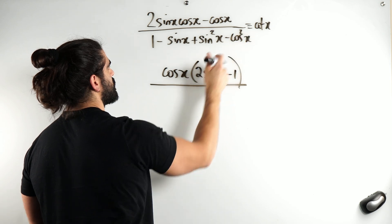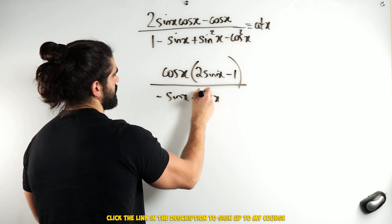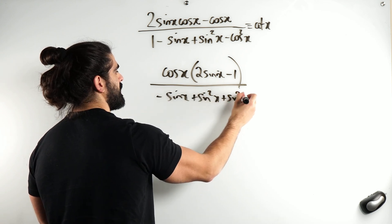1 minus cos squared is sine squared, so I get minus sine x, sine squared x, plus sine squared x.